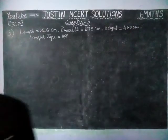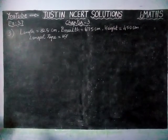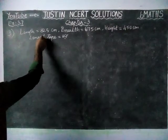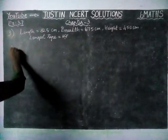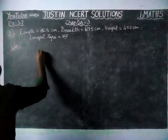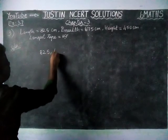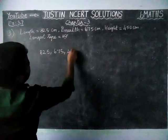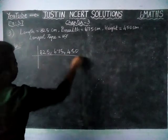They have given three measurements and we have to find the longest tape. We have to underline the word 'longest' — the meaning is Highest Common Factor. So now we are going to find the HCF of the given values 825, 675, and 450, and now we are going to divide them.